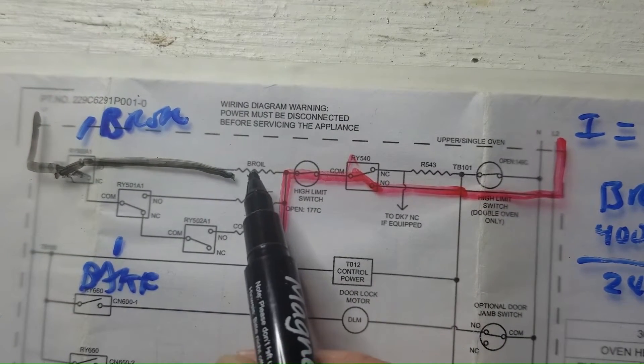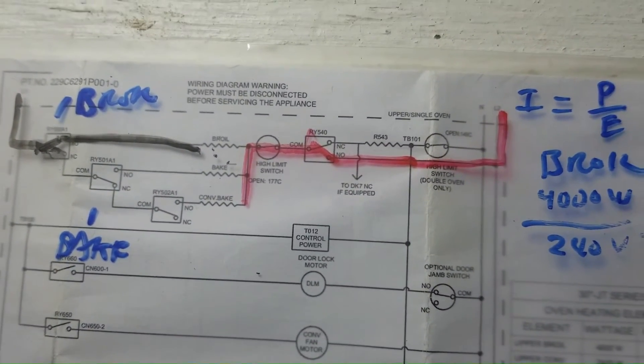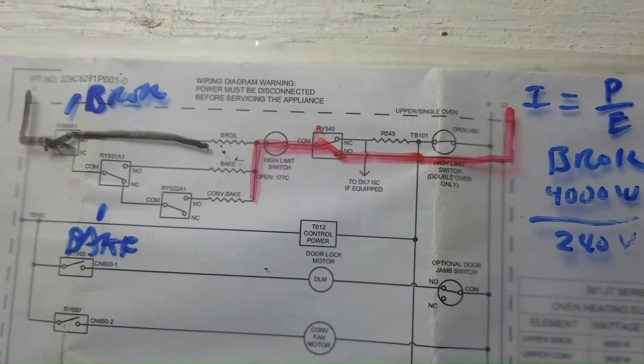When they weld together, this gets stuck right here and this broil element just stays on. The broil element stays on, it heats up very quickly because the top of the oven, the center is near the top of the oven, and so is that broil element.